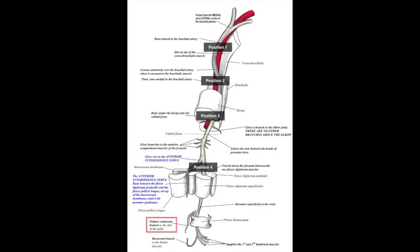As the median nerve courses down the arm, it can be scanned in four different positions: first at the mid arm, followed by just above the cubital fossa, then at the cubital fossa, and finally at the mid forearm.